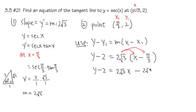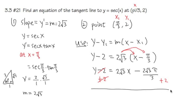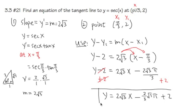That term becomes 2√3·π over 3. Then I add 2 to both sides to isolate y. So overall, y equals 2√3·x minus (2π√3)/3 plus 2. The back of the book writes it as 2√3·x minus (2π/3)√3 plus 2, which means the same thing. This is the answer.